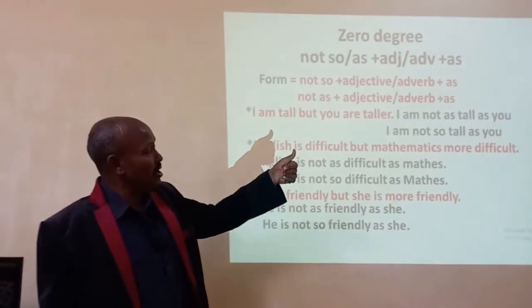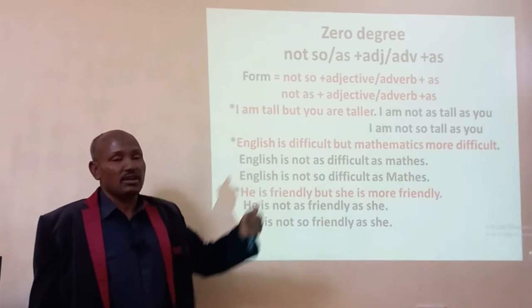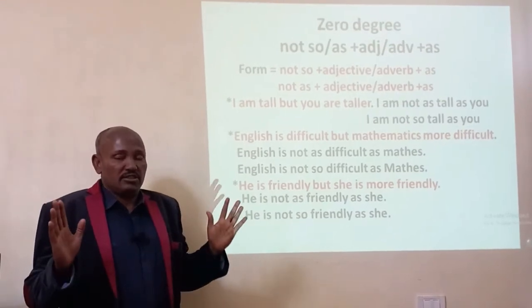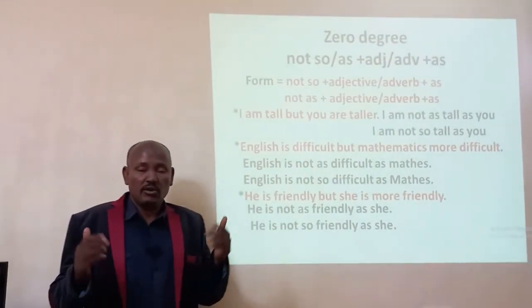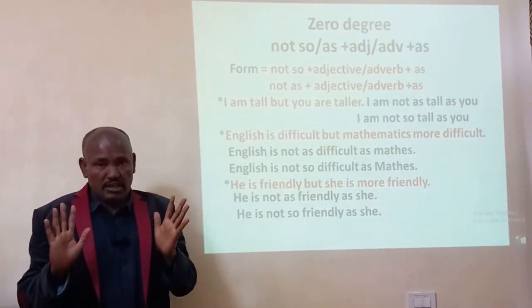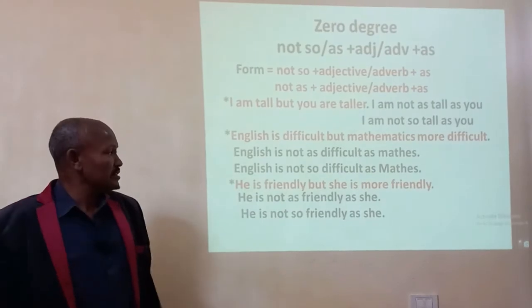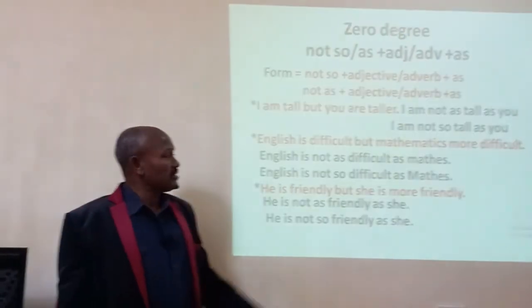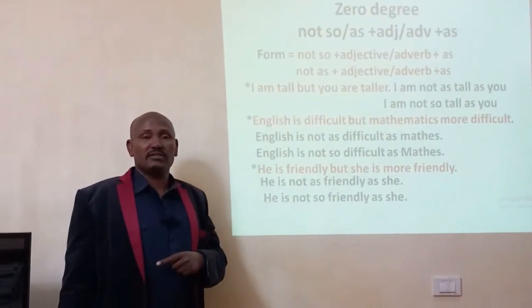I am shorter than you. A second example: English is difficult, but mathematics is more difficult. So English is not as difficult as math, or English is not so difficult as math. Or we can say that math is more difficult than English. These are examples of zero degree, where the two things are at different levels.